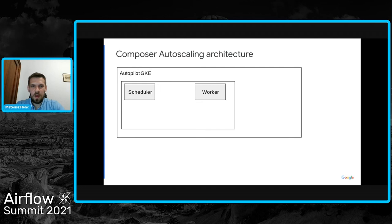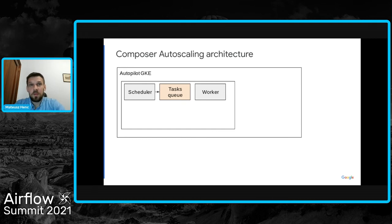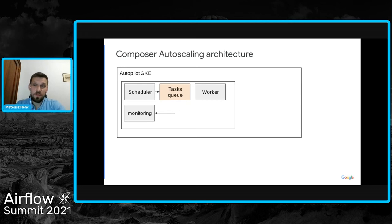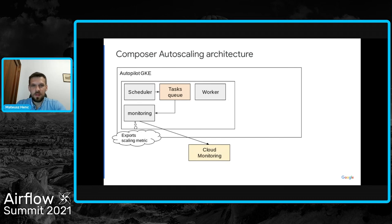Let's walk through the auto-scaler flow. Assume we have an environment with a single scheduler and a single worker running on an Autopilot GKE cluster. Everything begins when the scheduler puts more tasks in the queue. We use Celery executor — some tasks are processed by the existing worker right away, but if there are more tasks than available slots they are queued. The size of the queue is read by the monitoring component, a Composer system pod responsible for exporting metrics and checking environment health. It calculates the metric value using the algorithm described earlier and exports it to Cloud Monitoring every 60 seconds.